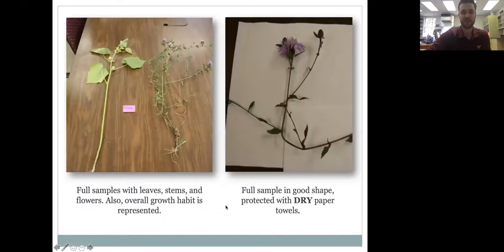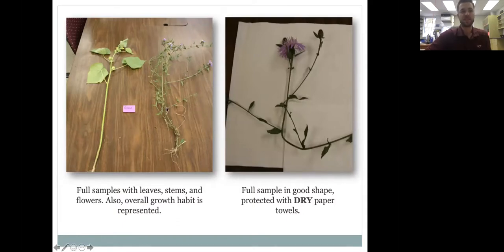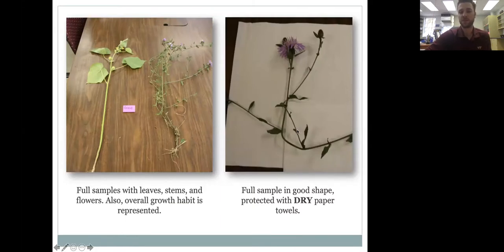Here are examples of good samples that will be easy to identify quickly. On the left is a large, upright velvetleaf plant with visible fruiting structures and flowers — those are often the key diagnostic features. Paper towels help preserve the sample well during shipping.